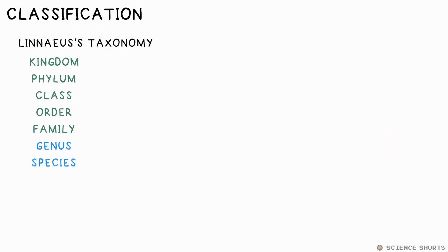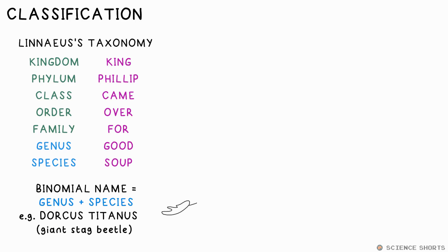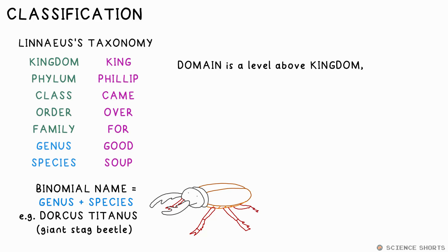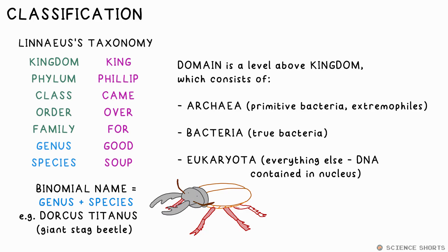Carl Linnaeus classified organisms into kingdom, phylum, class, order, family, genus, and species. A good mnemonic for this is: King Philip came over for good soup. The binomial, or Latin name for an organism, is just the genus and species combined. As time went on, another level above kingdom was needed: domain. The three domains are archaea (that's primitive bacteria), true bacteria, and eukaryota — that's everything else with DNA and a nucleus in the cells. Archaea are often found in extreme environments on the earth, and can therefore be called extremophiles.